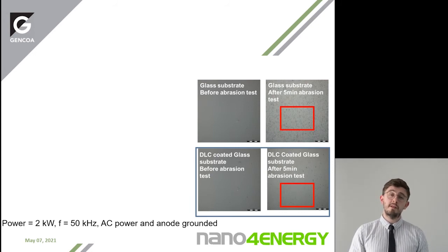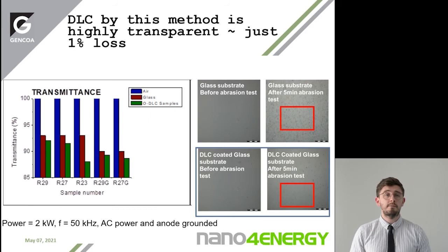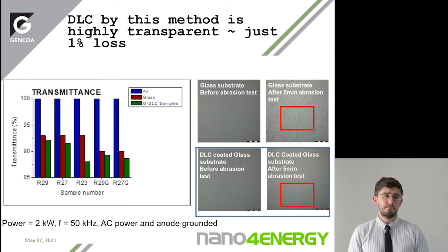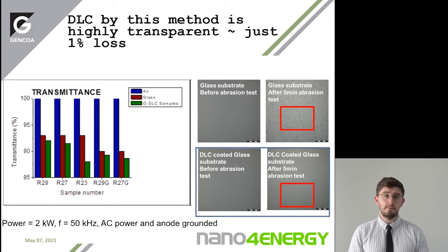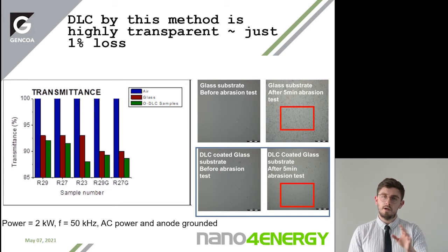Moving on to the transmittance of the glass, which is also important. The transmittance test in air is 100%. The red bar is the untreated glass, and the green is the glass with diamond-like carbon. You can see there's very little change in transmittance — around just 1%, which is a positive result.